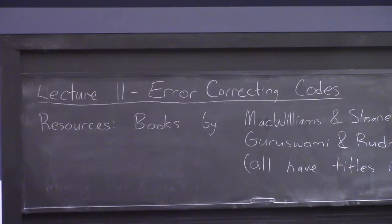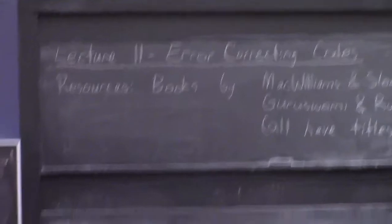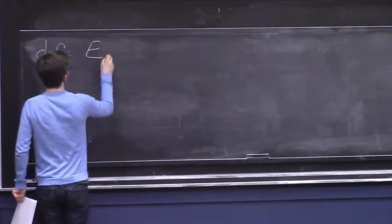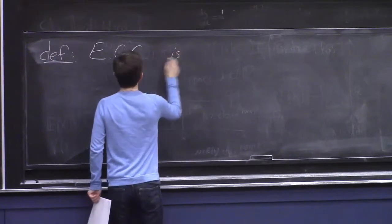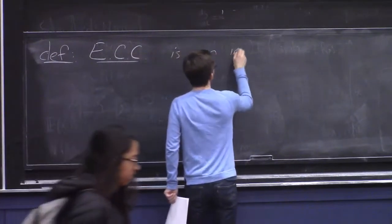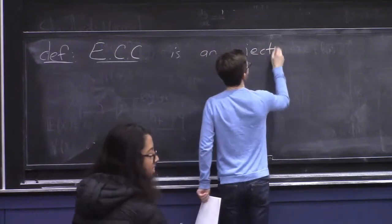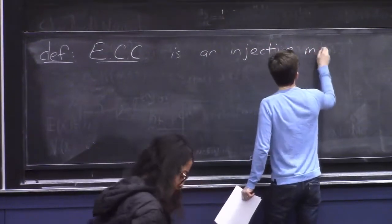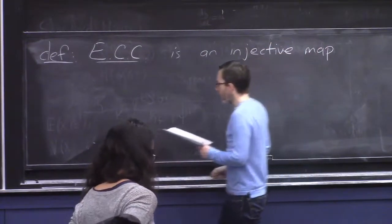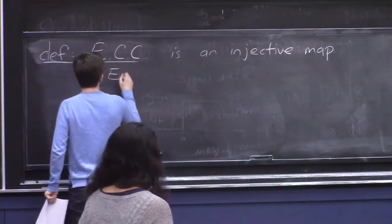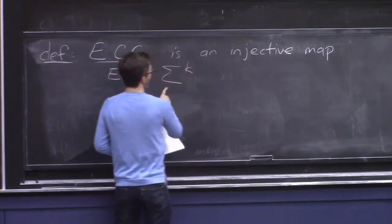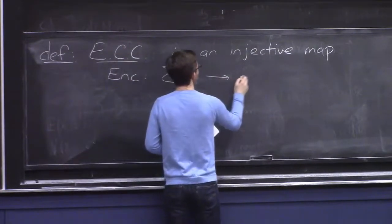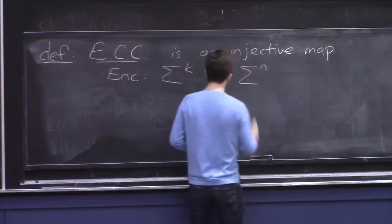So let's dive in. What is an error correcting code? It's somewhat of a long definition. An error correcting code, ECC is how I'll abbreviate it here, it's a map, it's an injective map that explains how to encode the data. And I'll call this map ENC for ENCODE. And it maps strings of length K over some alphabet Sigma to strings of length N over the same alphabet.